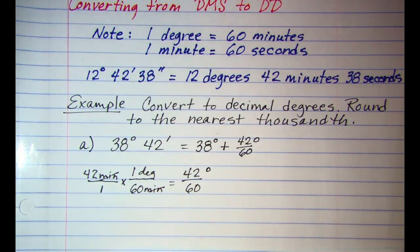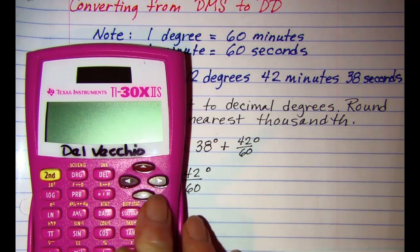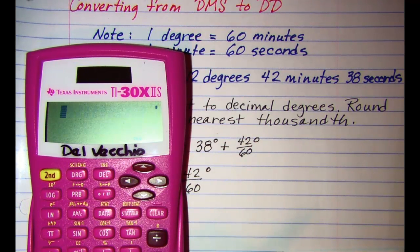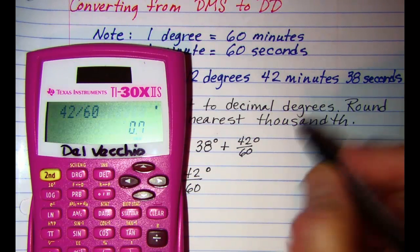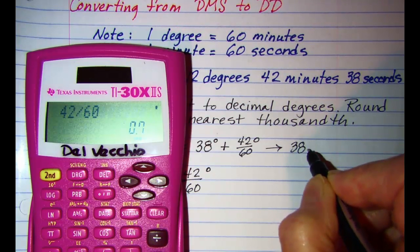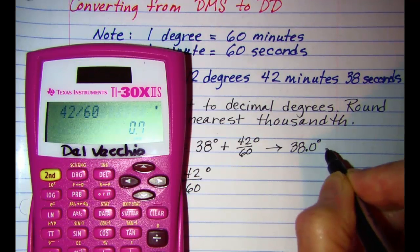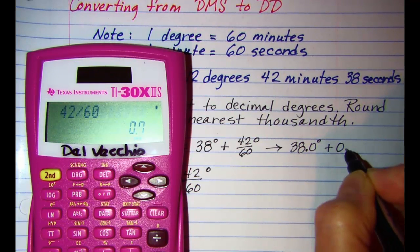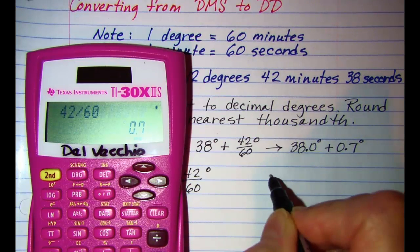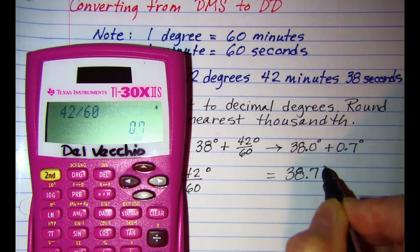Then if we use our calculator, 42 divided by 60 is 0.7. So this is the same as 38 degrees plus 0.7 degrees or 38.7 degrees.